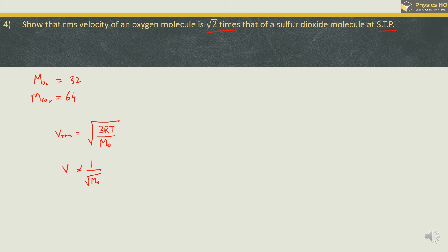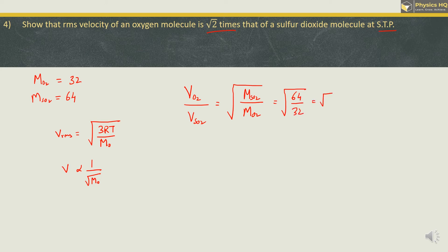Taking the ratio: V_O₂ / V_SO₂ = √(M_SO₂ / M_O₂) = √(64/32) = √2. So the RMS velocity of oxygen is √2 times the RMS velocity of sulfur dioxide. I hope you all understood this. Let us go ahead to the next sum.